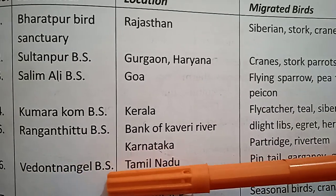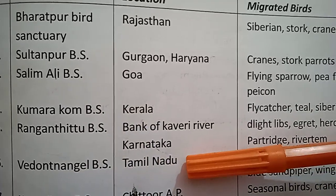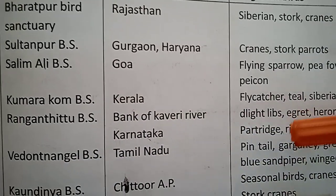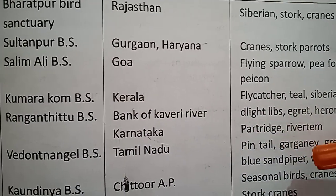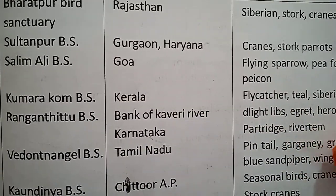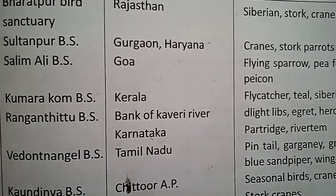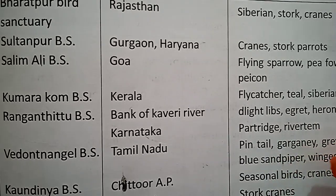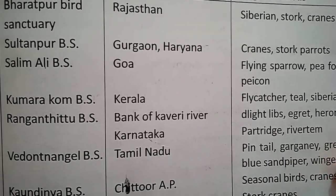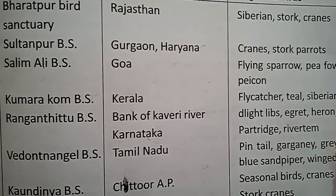Vedanthangal Bird Sanctuary, located in Tamil Nadu. The migratory birds here include pintails, garganeys, gray wagtails, blue sandpipers, and white-winged terns.